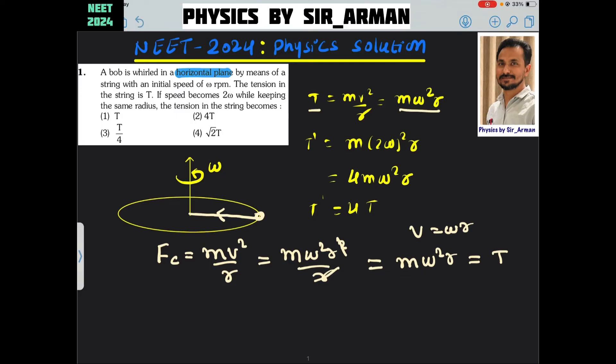Now, what is given here? The tension in the string is T. If the speed becomes 2ω and we keep the radius the same, what will be the new tension in that case?